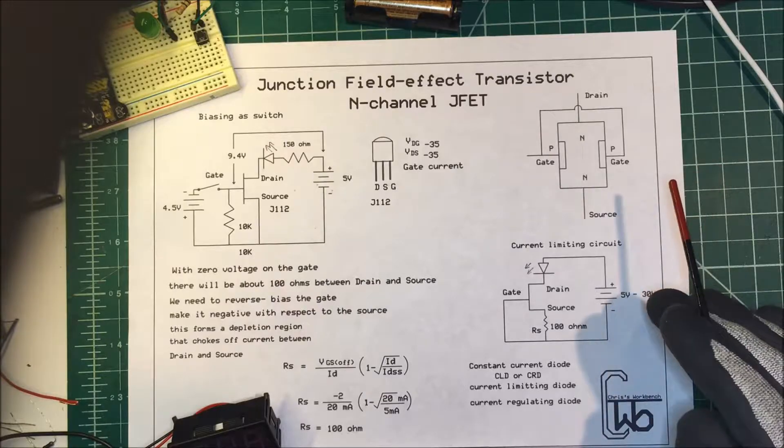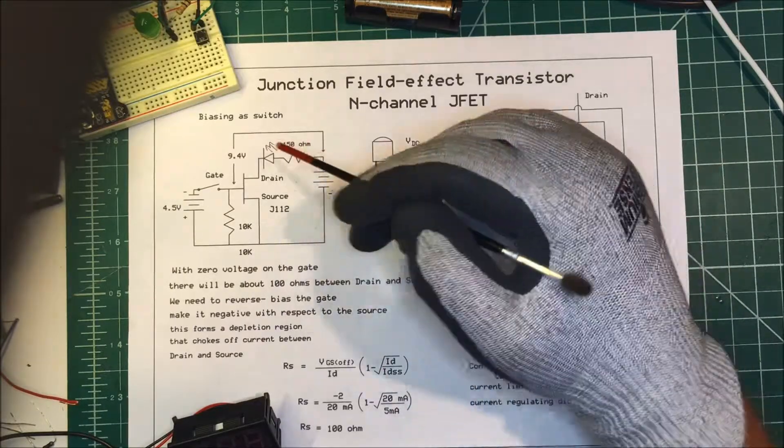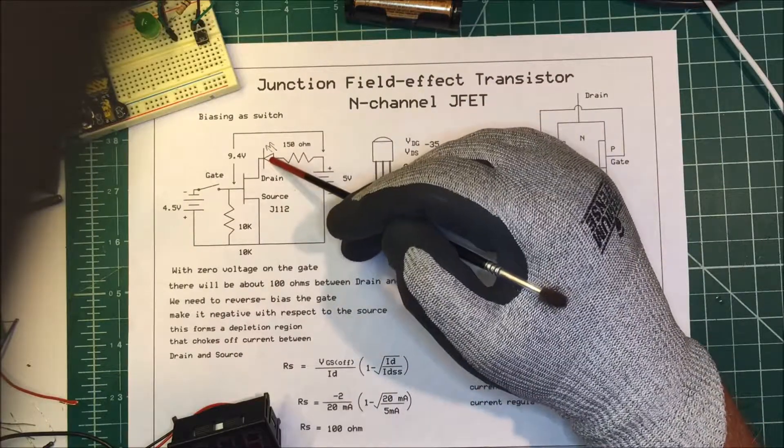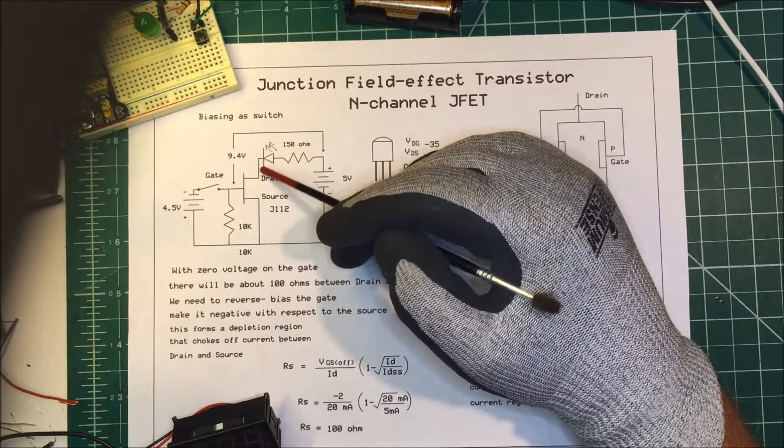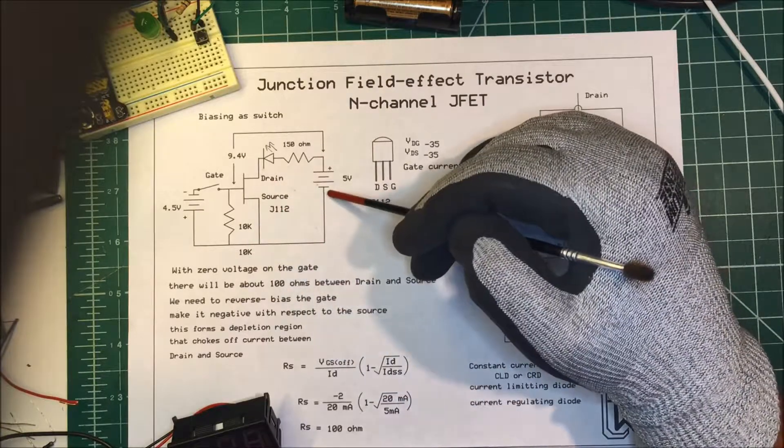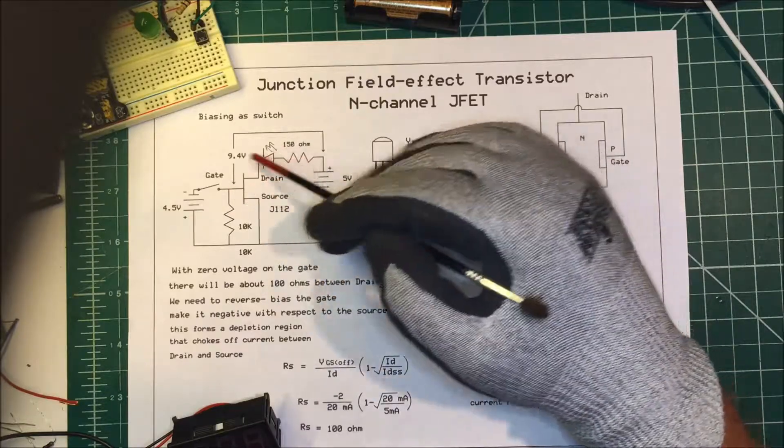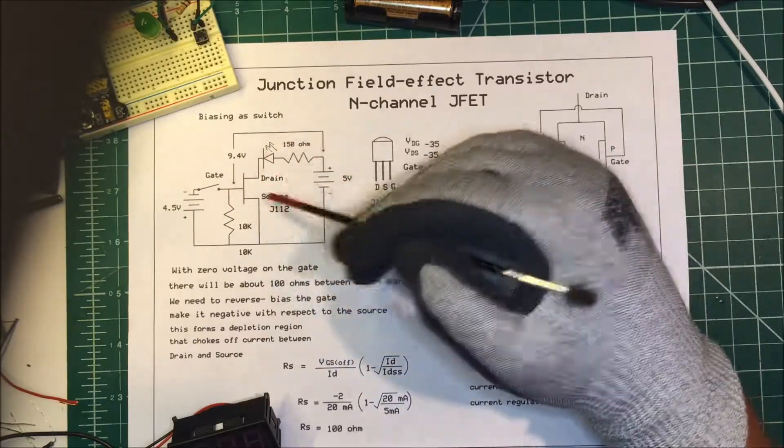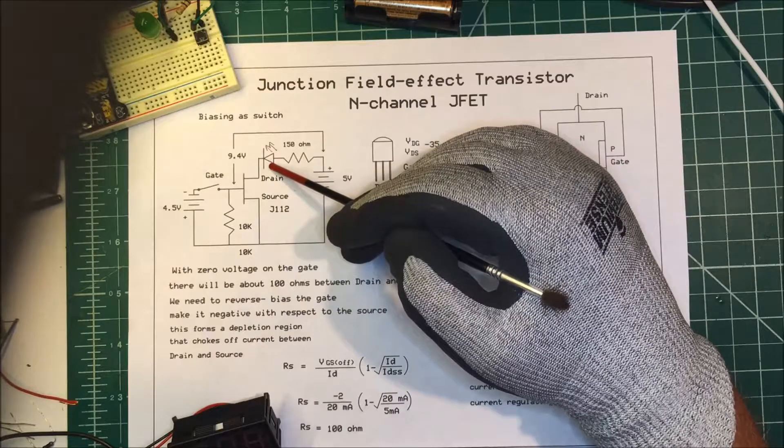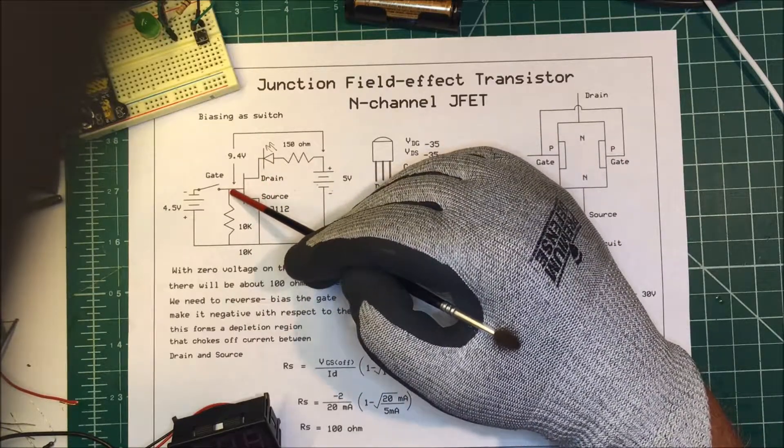We're going to set it up as a switch. I have my 5-volt power supply here. I've got a 150-ohm resistor, and then I have my LED here tied to the drain. It goes through the drain to the source and back to the battery here. This is going to be lit all the time. Current's just going to flow through here. In order to turn it off,